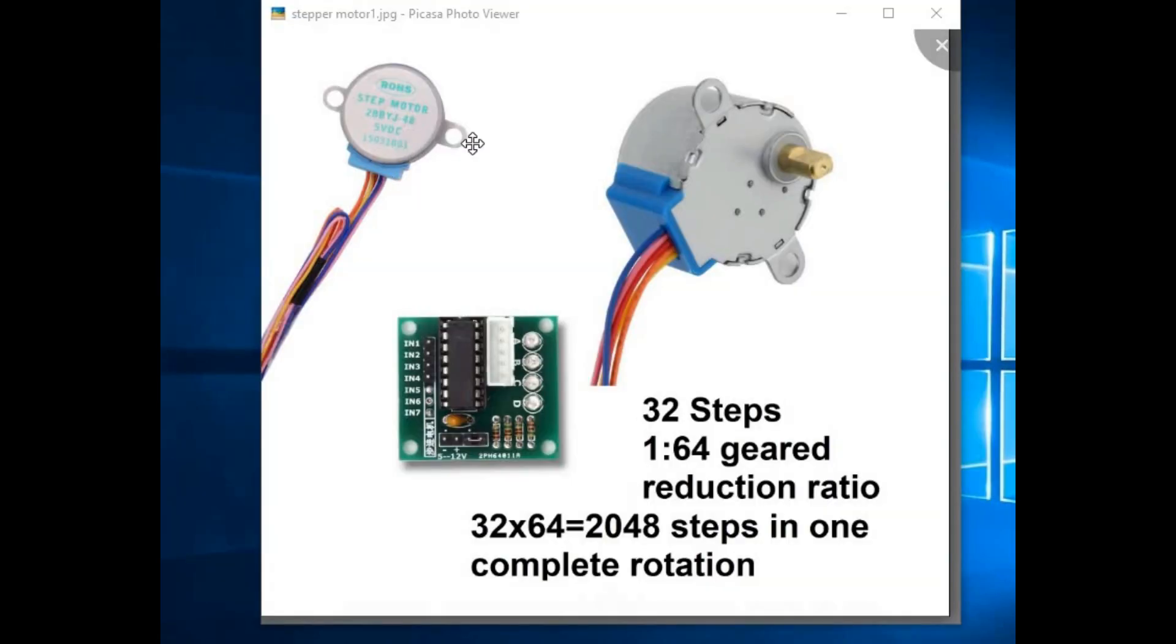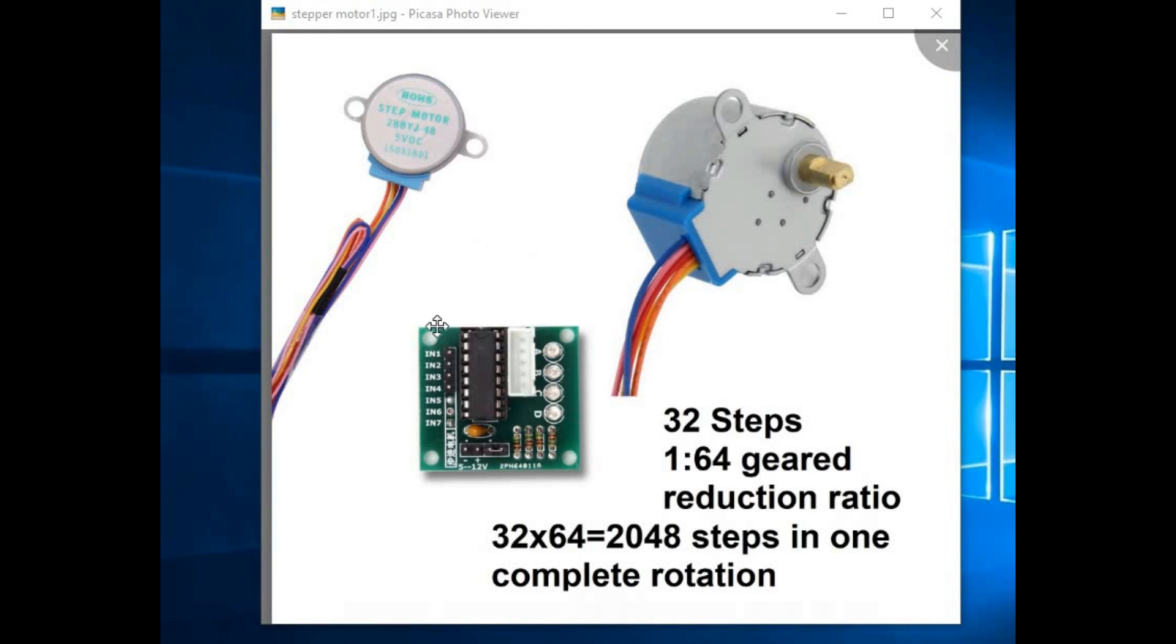In case of 28 BYJ48 stepper motor, the four coils are divided into small parts and then those parts are energized. It requires 32 steps to complete one revolution. But again the motor has 1 to 64 gear reduction ratio. So 32 into 64, that means 2048 steps is required to complete one rotation. That means we have to send 2048 times pulse from our microcontroller to complete one revolution. In this video, we have discussed only the full step technique to run the motor. There are also half step and micro stepping technique to run this motor.